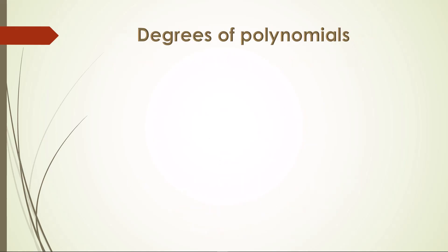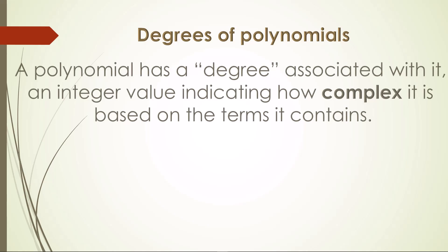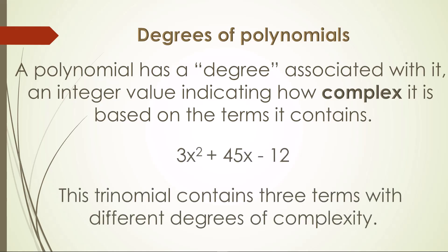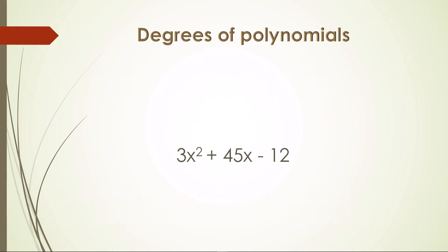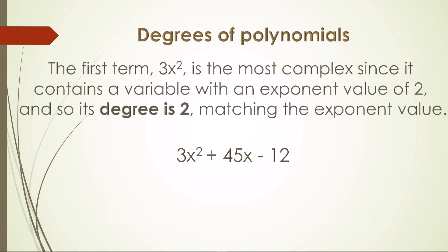A polynomial has a degree associated with it, an integer value indicating how complex it is based on the terms it contains. This trinomial, 3x squared plus 45x minus 12, contains three terms with different degrees of complexity. The first term, 3x squared, is the most complex since it contains a variable with an exponent value of 2, and so its degree is 2, matching the exponent value.